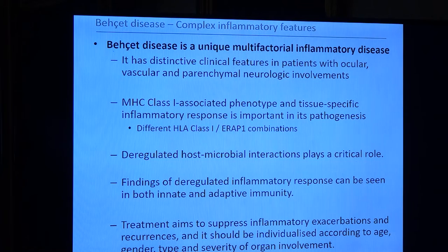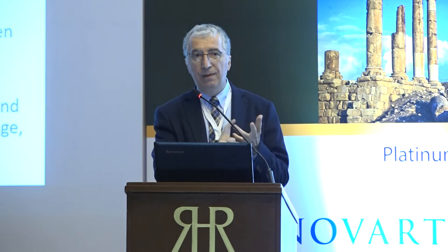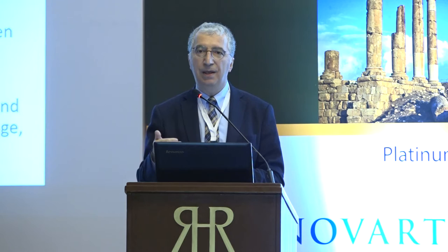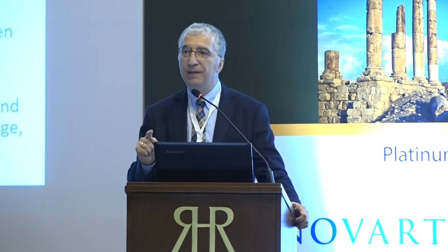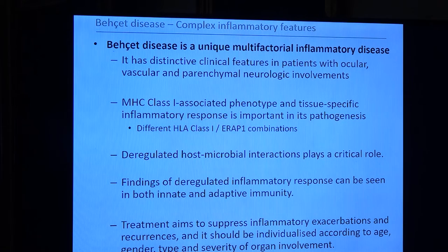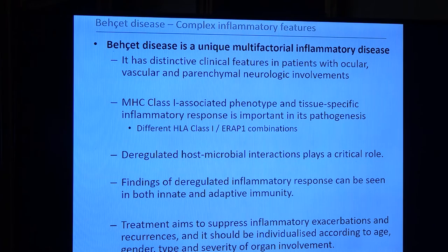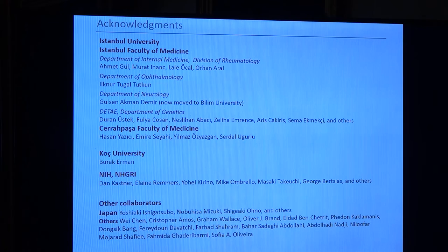In summary, Behçet's disease is a unique multifactorial disease with distinctive features, especially if you concentrate on ocular, vascular, and parenchymal neurologic manifestations. It is strongly associated with HLA-B51, but we need additional polymorphisms such as ERAP1 haplotypes and several others to define the clinical picture. Therefore, B51 is not a diagnostic test, and deregulated host-microbial interaction defines the clinical picture. With treatment using different agents depending on the patient's requirements, we aim to control acute exacerbation and prevent recurrences. I want to finish by thanking my colleagues from Istanbul University, Cerrahpaşa Medical School, Koç University, and especially the NIH, NHGRI, Dan Kastner, Elaine Remmers, and international collaborators who provided samples for the GWAS studies. Thank you very much for the kind invitation.